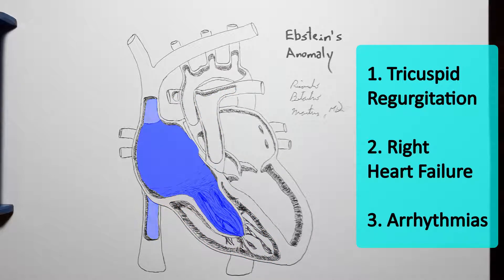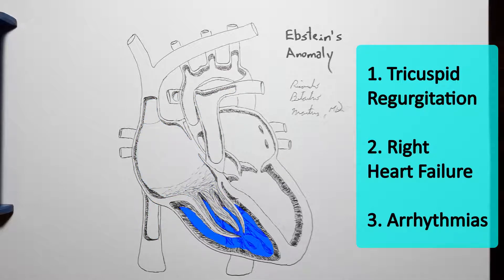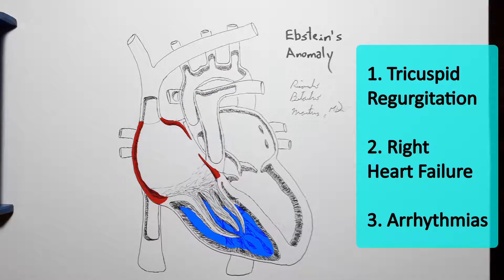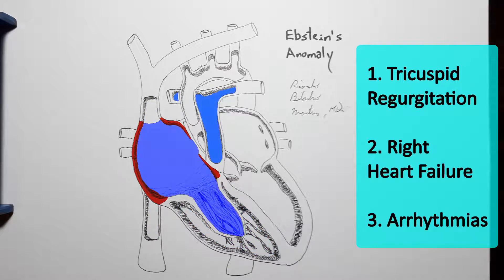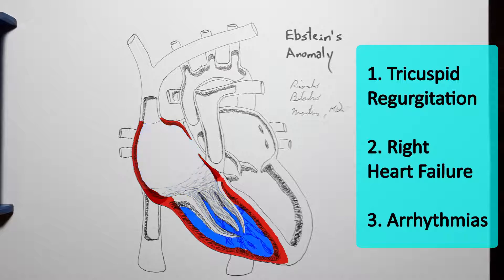All this blood back-flowing from the right ventricle to the right atrium is likely to severely volume-overload the right atrium, causing it to massively dilate and also eventually overload the right ventricle.